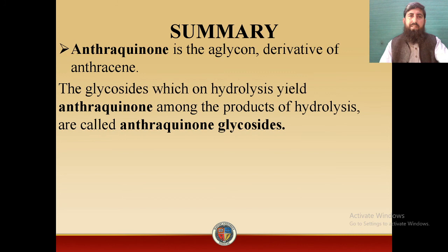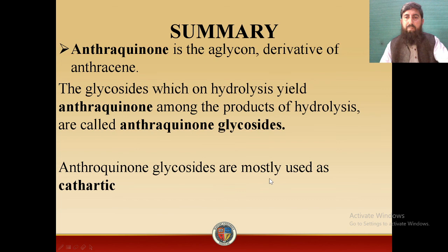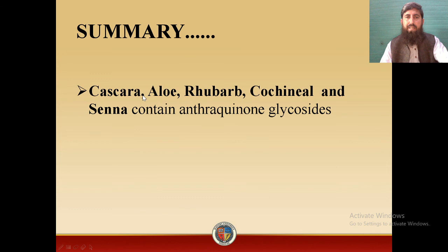Summary of today's lecture: anthraquinone is the aglycone derivative of anthracene. The glycosides which on hydrolysis yield anthraquinone are called anthraquinone glycosides. Anthraquinone glycosides are mostly used as cathartic agents. Cascara, Aloe, Rhubarb, Cochineal and Senna contain anthraquinone glycosides. We also went through the biological source, geographical distribution, collection and preparation, chemical composition and medicinal uses of these drugs.